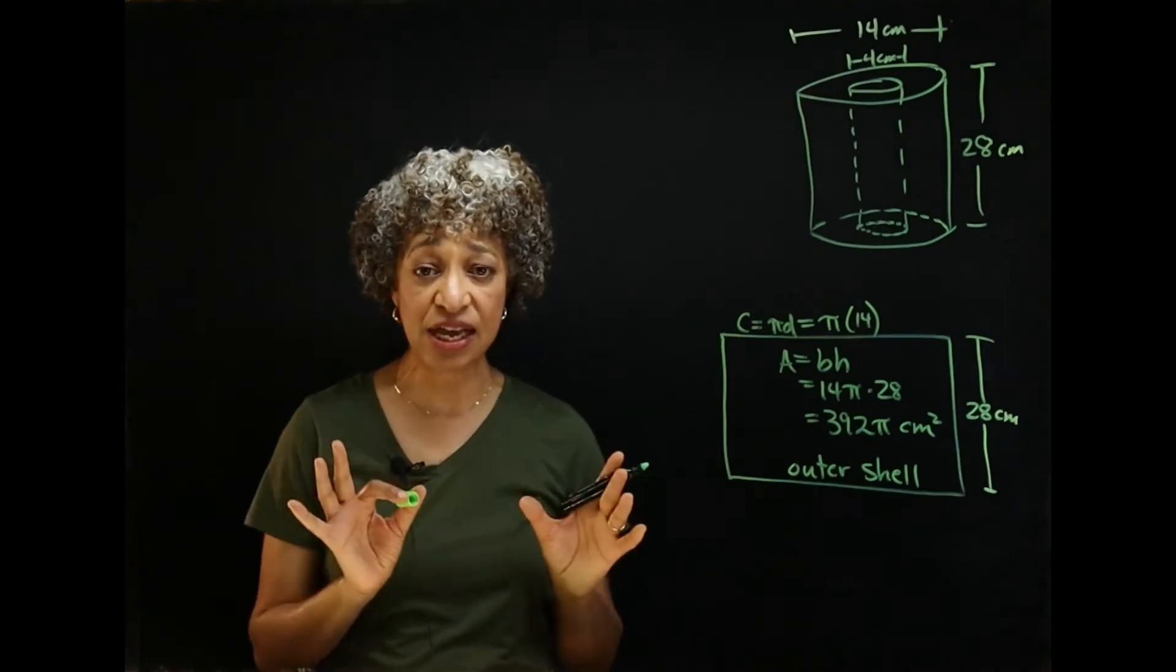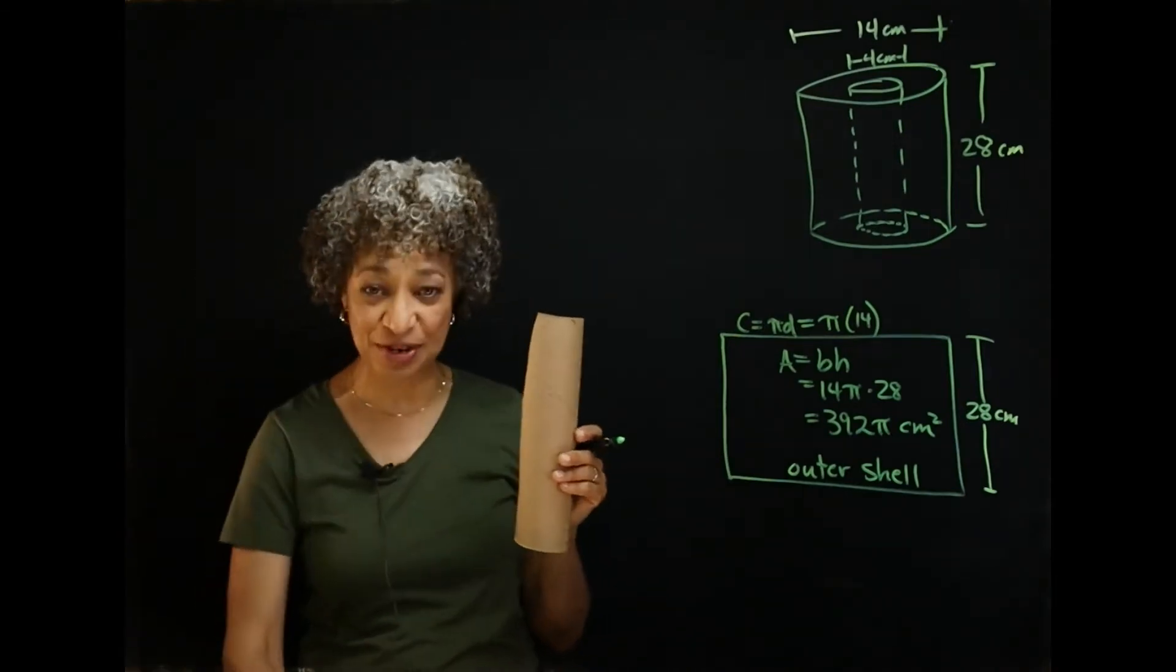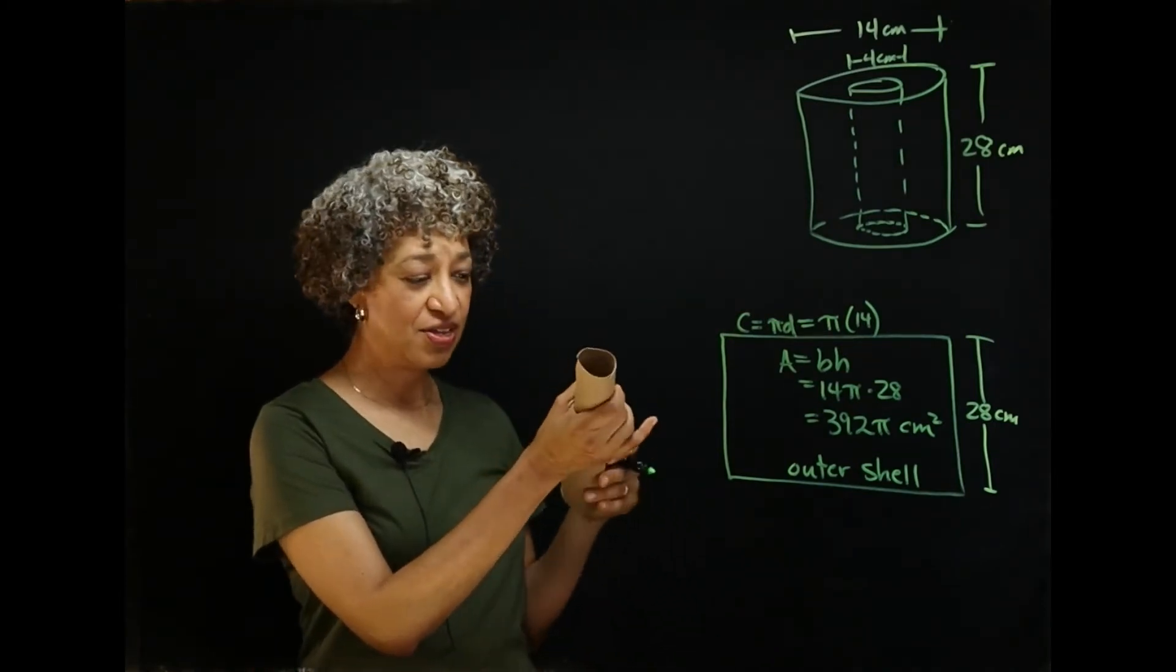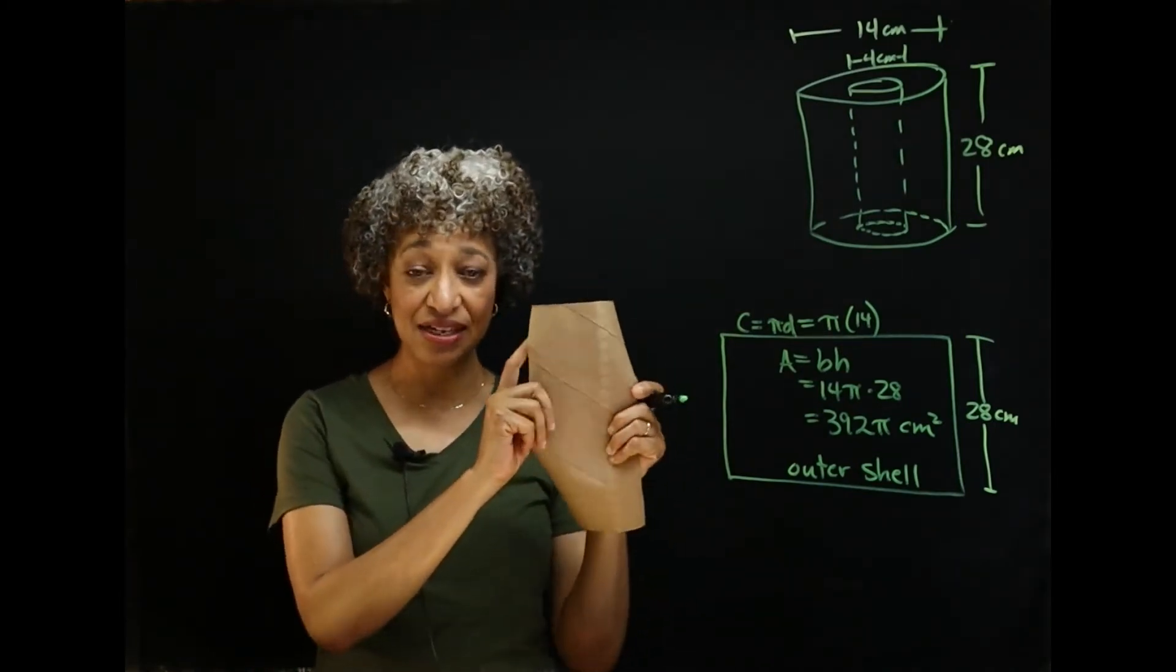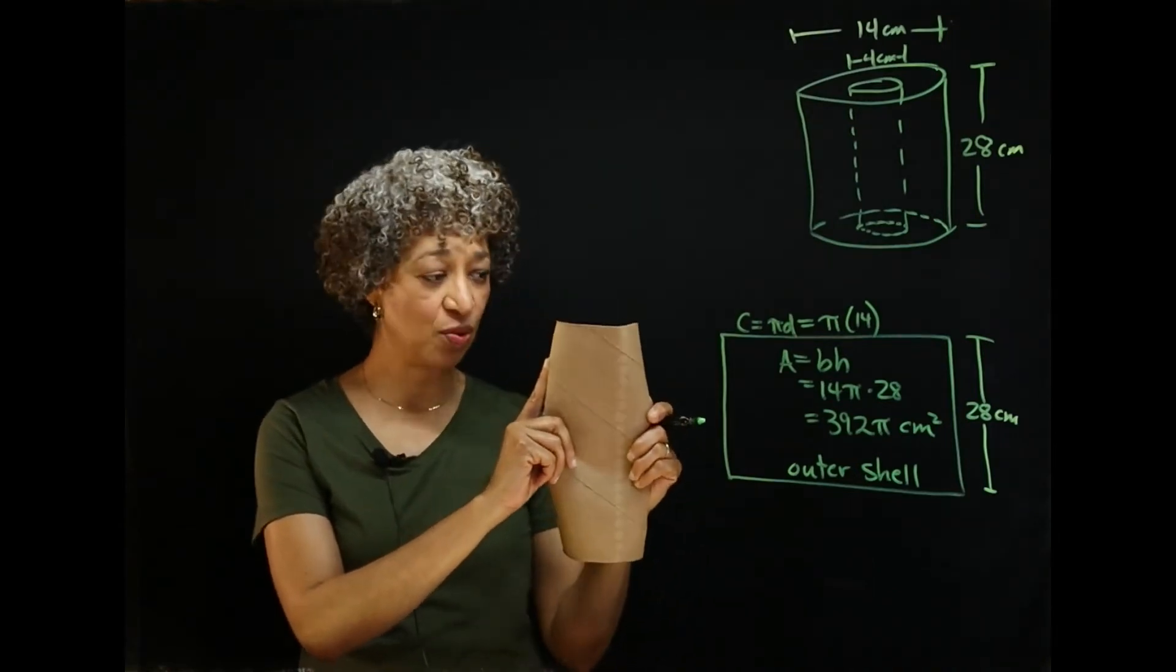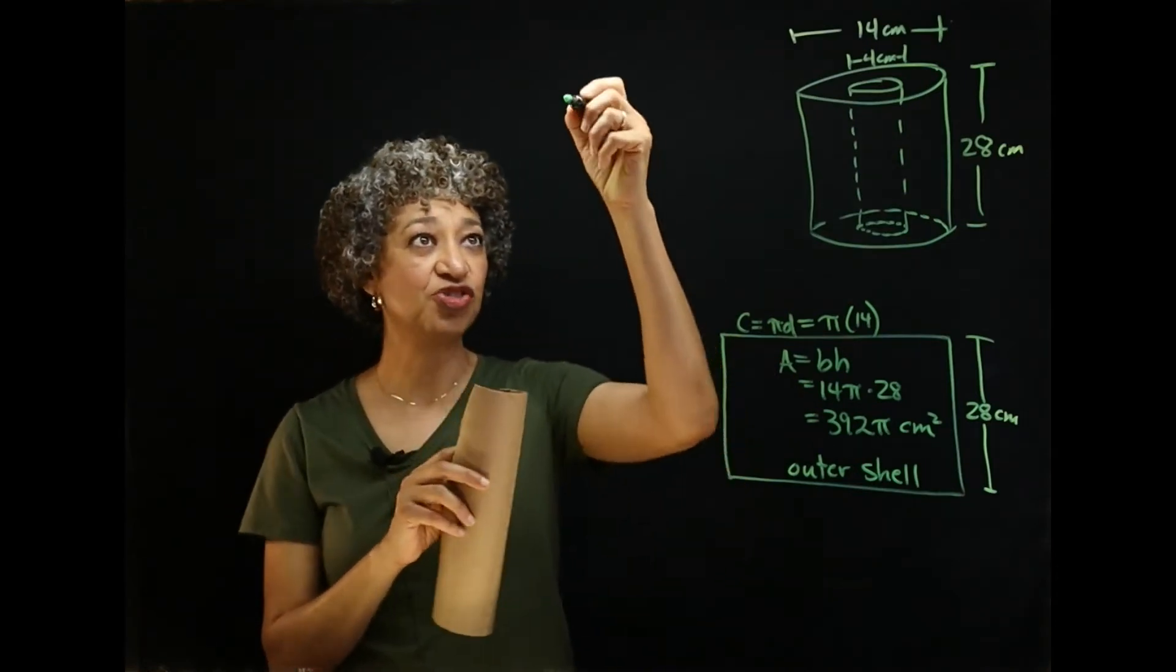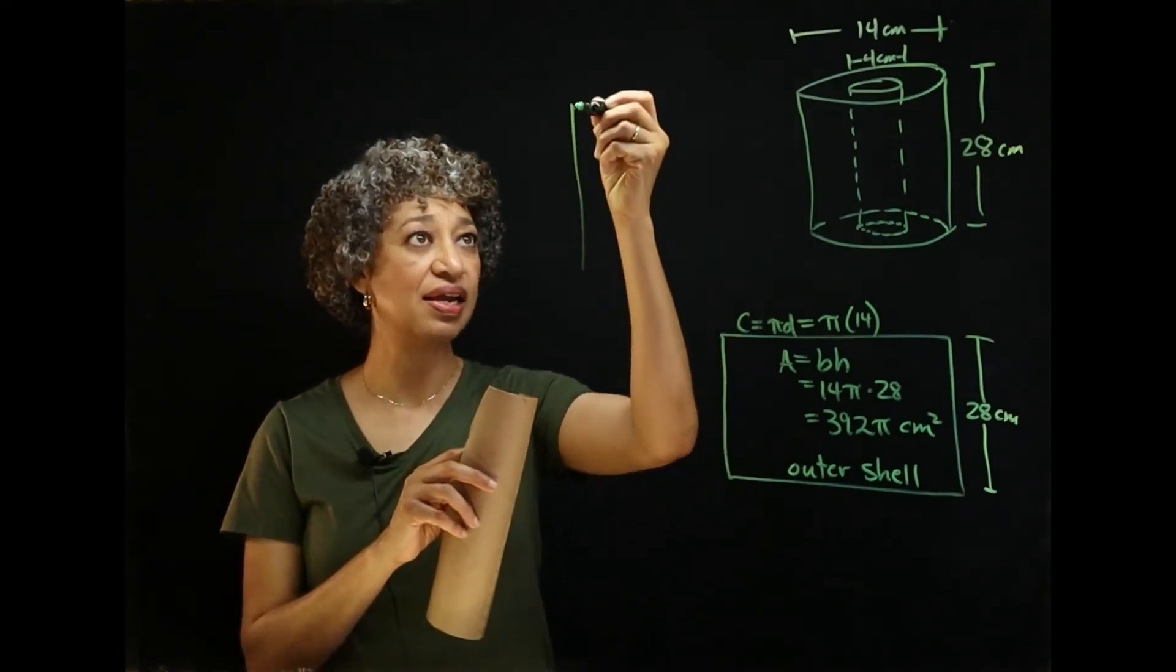But now we need the inner shell. So, I have taken the tube out of a roll of paper towels. And this is it. So, when I open it, again, it is a rectangle of the same height as the paper towel roll. It's narrower than this one. So, let's draw that. This is our inner shell.